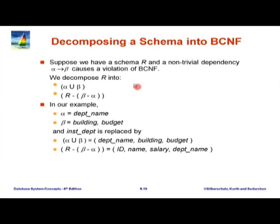If we apply this test for BCNF and BCNF is violated, then we can be sure that there is a non-trivial functional dependency of this form which holds, where alpha is not a super key. So what we do is decompose R into two relations: one is a relation alpha union beta, containing attributes of alpha and beta; the other is a relation where we remove those attributes of beta which are not in alpha, because you may have attributes repeated in alpha and beta.